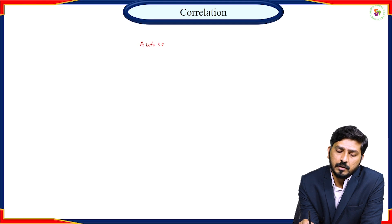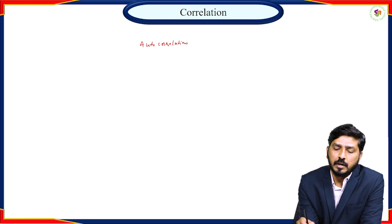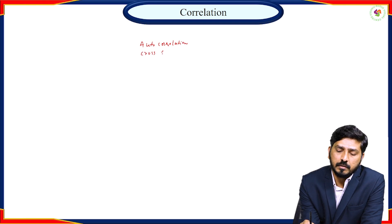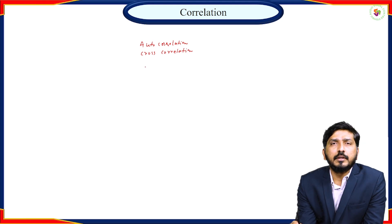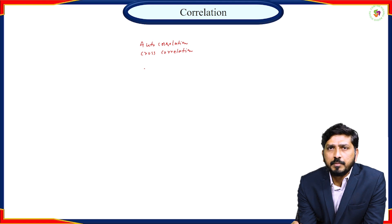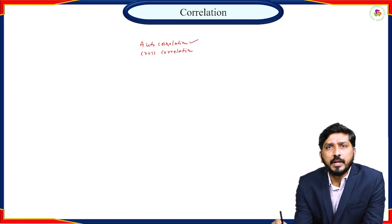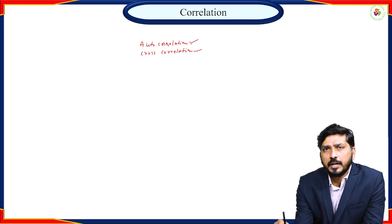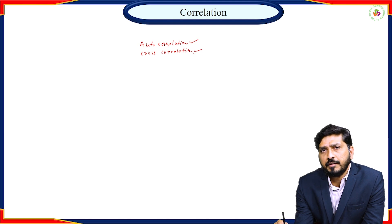Autocorrelation and cross-correlation. As the definition says, correlation is used to find the degree of similarity between two signals. The two signals could be of same type or of different type. If both are of same type, we call it autocorrelation. And if the two signals are of different type, it is called cross-correlation.